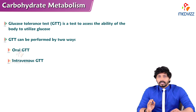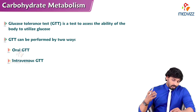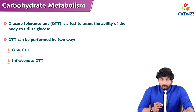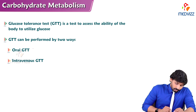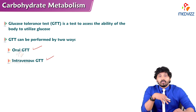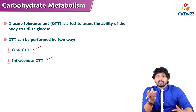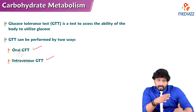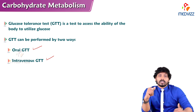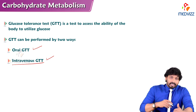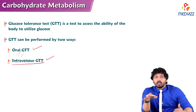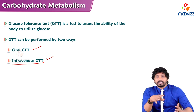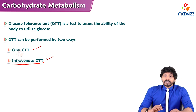GTT stands for Glucose Tolerance Test. It is a test to assess the ability of the body to utilize glucose. GTT can be performed in two ways: oral GTT and intravenous GTT. In oral GTT, the person is asked to mix a weighed amount of glucose in water and consume it, then blood glucose is estimated at intervals of one and a half to two hours. Intravenous GTT is used for patients with malabsorption conditions or surgical removal of intestinal parts.